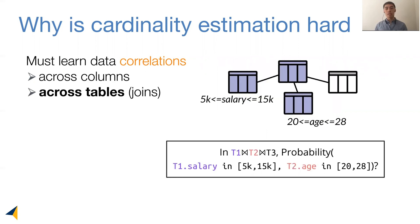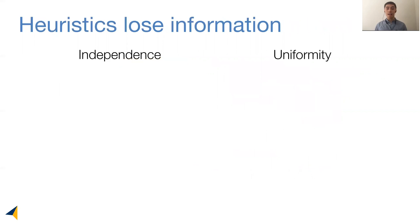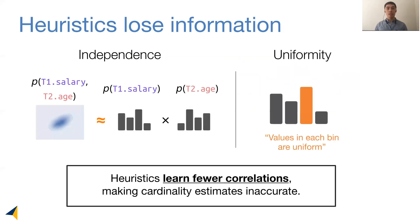More importantly, correlated attributes can live in different tables and be connected only by joins. This makes the estimation problem even harder. Because our data distributions are high-dimensional and highly complex, our current systems often use heuristic assumptions to simplify the learning problem. For example, the infamous independence assumption says that any distribution over multiple attributes is approximated by the product of their one-dimensional distributions — in other words, any correlation between the attributes is lost.